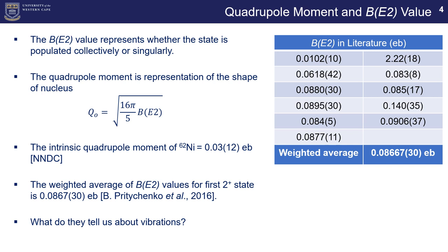Following that, we're looking at the B(E2) value for the first excited state in nickel 62, which was compiled by Prytychenko and his team in 2016, which compiled multiple nuclei on B(E2) values for the first excited state. I decided to make a weighted average on what is to expect of this value. As you can see that is the value of 0.0867 with the uncertainty of 13. So what does this have to do with vibrations? That's what I'll discuss next.